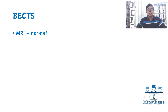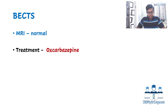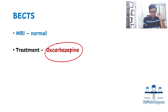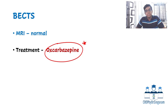To control seizures in BECTS, since it is a focal seizure, the drug of choice is carbamazepine, or nowadays oxcarbamazepine. That is the drug of choice for this condition. That is about the first epilepsy condition with focal seizure — BECTS.